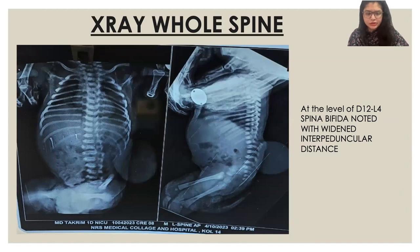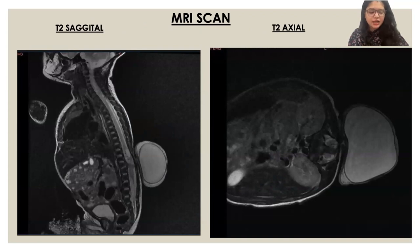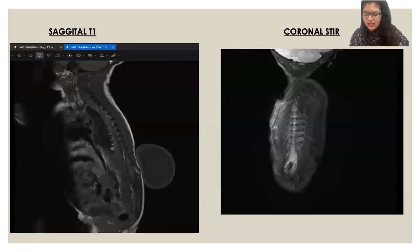MRI scan showed loss of lumbar curvature, with the spinal cord low-lying and attached to the posterior defect. At that level, evidence of diastematomyelia was also present. The axial T2 image shows splitting of the spinal cord into two symmetric hemichords traversing around a large osseous spur, classifying it as Type 1 diastematomyelia. The T1 sagittal and coronal STIR images further demonstrate the division of the cord.